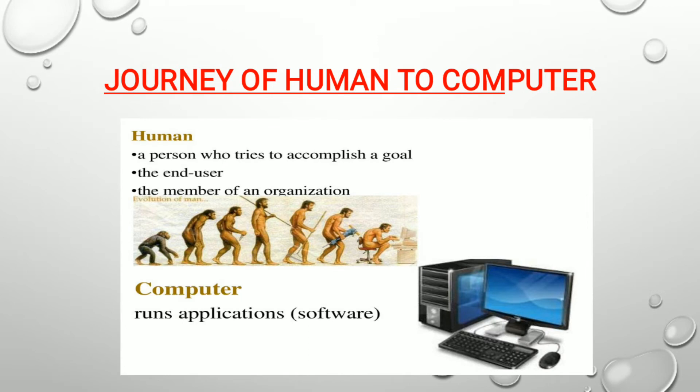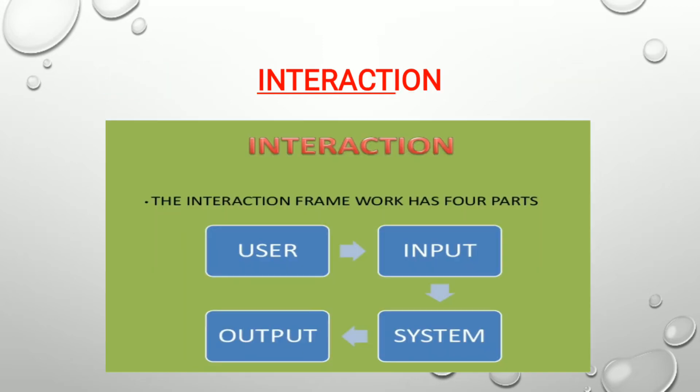Journey of Human to Computer: Human — a person who tries to accomplish a goal — is the end user, the member of an organization. The computer runs application software.